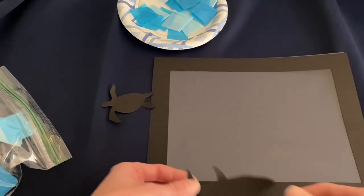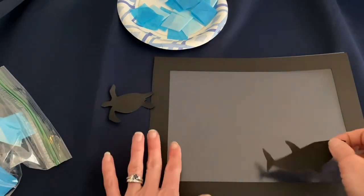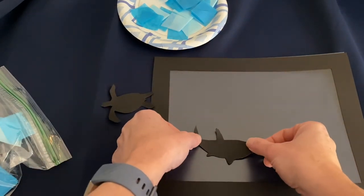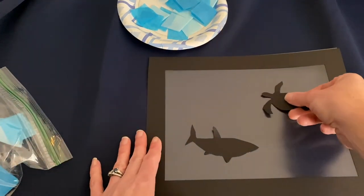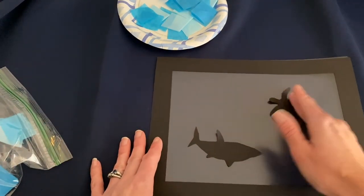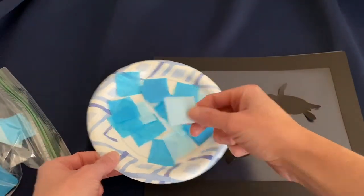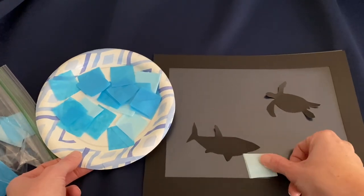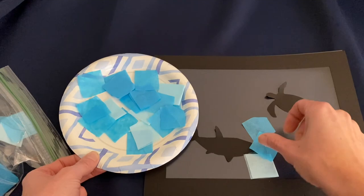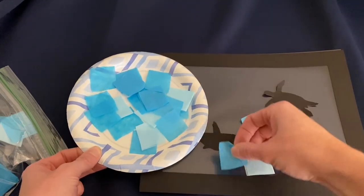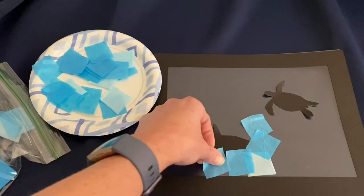We're going to peel this backing off. Our first step is to add our animals. Your child can put them wherever they want on this sticky sheet. I'll put my shark here and my turtle up there. We'll put down all the animals, and then we're going to add the water. We can even cover up our animals - that's okay.